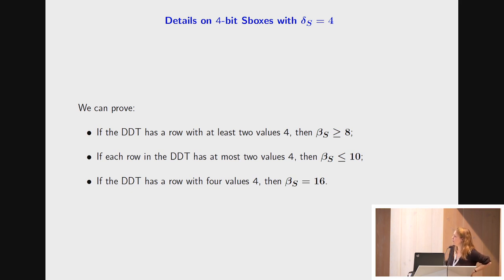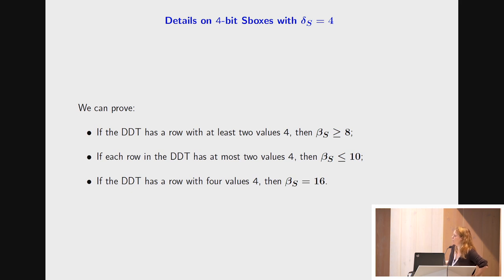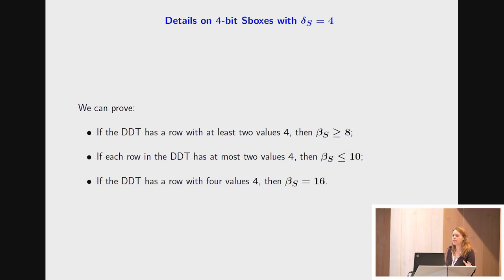By this formula we derive many observations on the BCT of 4-bit S-boxes. For instance, if the DDT has a row with at least two values equal to 4, then the boomerang uniformity is at least 8. Conversely, if all rows in the DDT have at most two values equal to 4, then the boomerang uniformity is at most 10. Also — already observed in the Eurocrypt paper — if one row in the DDT has exactly four values equal to 4, then the boomerang uniformity of the S-box is maximal and equal to 16.